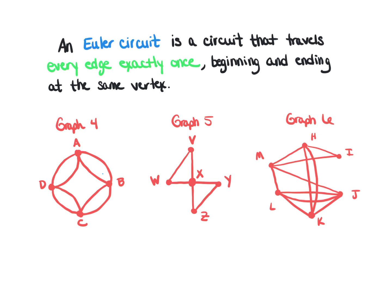Taking graph number four and starting at vertex D: travel D to C, then to B, then to A, and back to D. Now I must continue since I have not traveled all the edges. From D, go to A, then back to B, then to C, and then to D. That completes the Euler circuit — every edge traveled exactly one time.